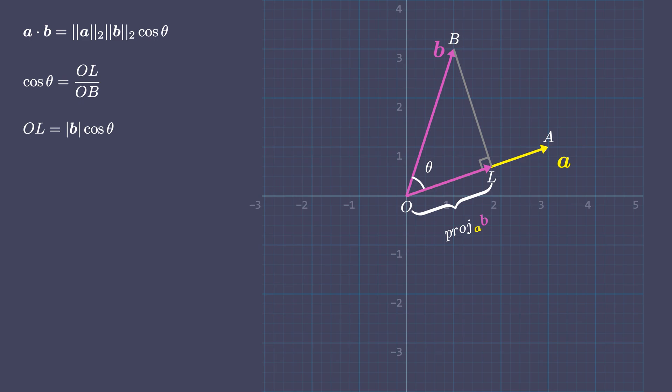To multiply two vectors, it makes sense to multiply their lengths together, but only when they point in the same direction, right?